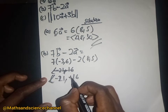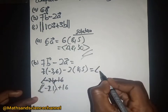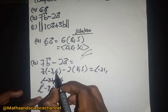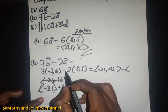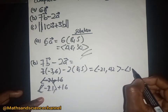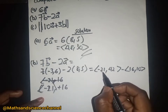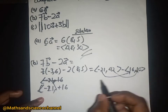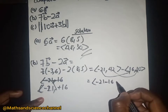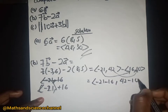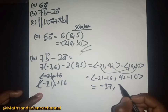So 7 multiplied by -3 gives us -21, and 7 multiplied by 6 gives us 42. Then 2 multiplied by 8 is 16, and 2 multiplied by 5 is 10. Subtracting component-wise: -21 minus 16 equals -37, and 42 minus 10 equals 32. So the answer for part (b) is (-37, 32).